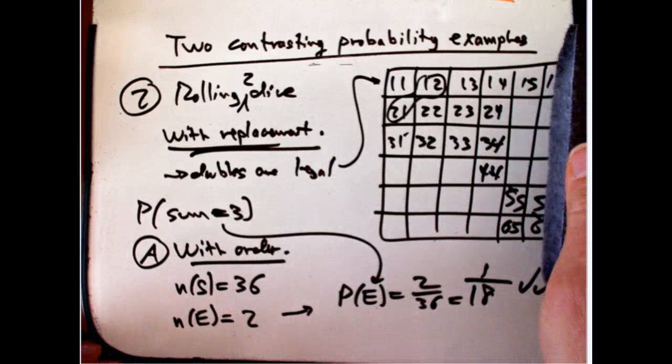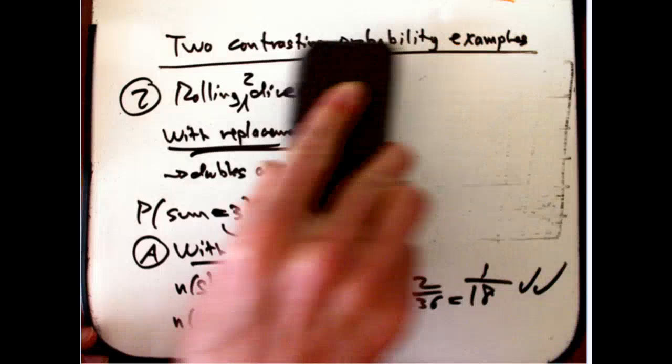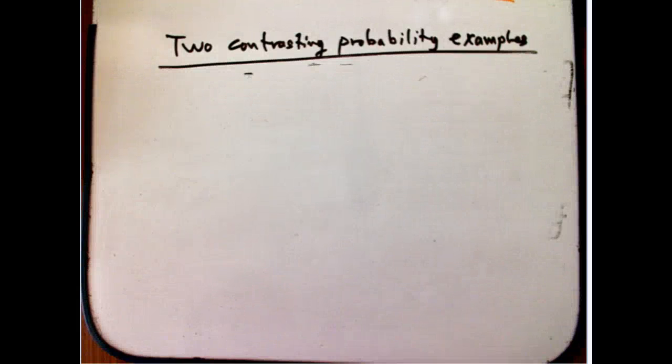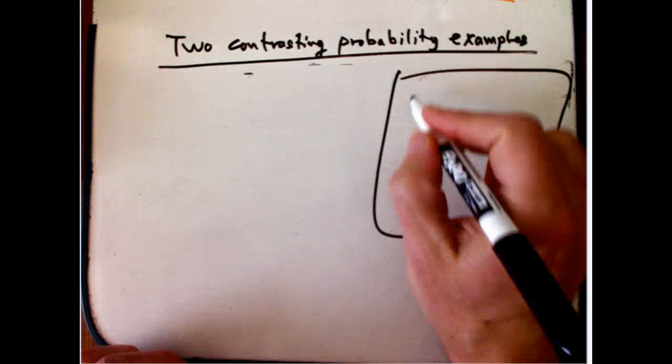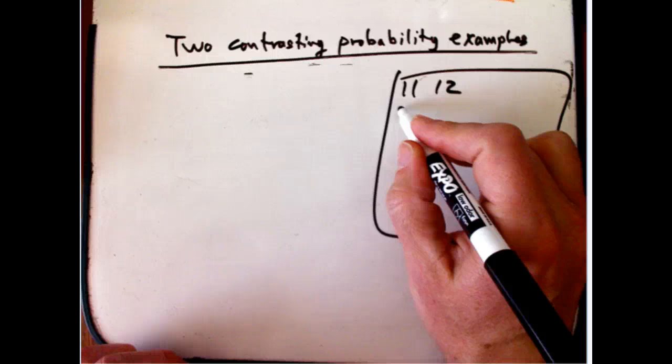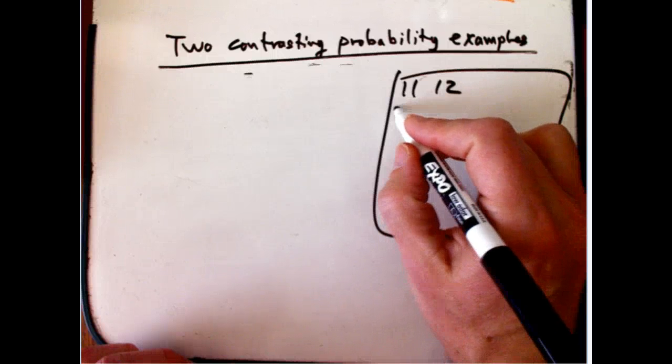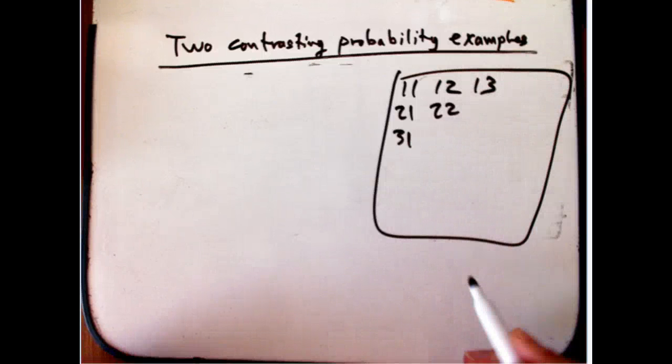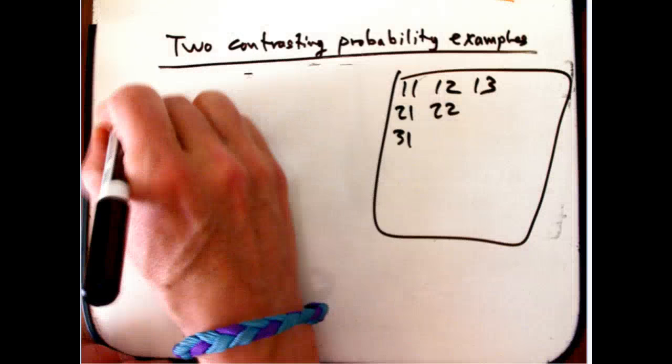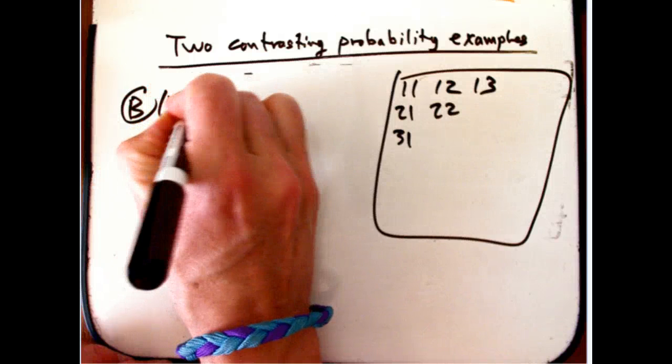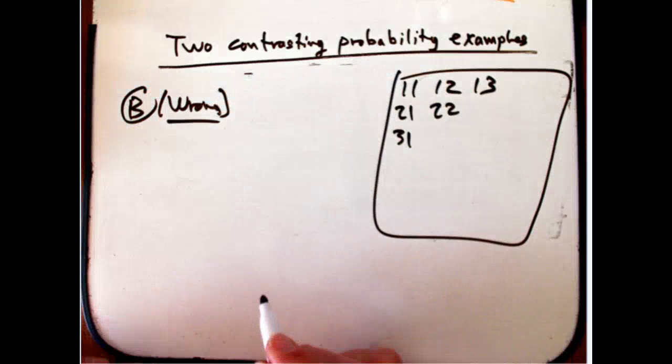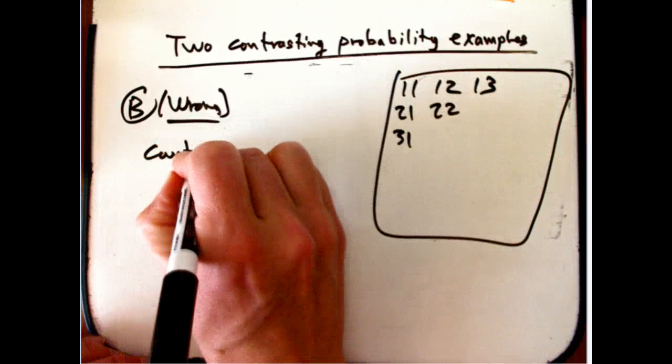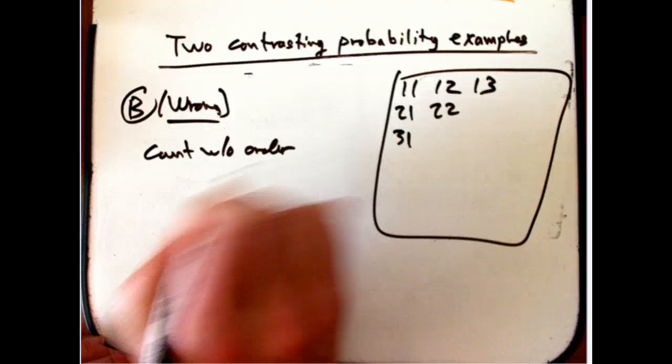In the other case, when I had without replacement, I was able to do it. I just erased my lovely thing. Well, I'm just going to write down the key parts. One, one, one, two, two, one. I get so eager to erase sometimes. That's going to be good enough. B, this is going to be the wrong way to do it, so don't imitate this. I could say, count without order.